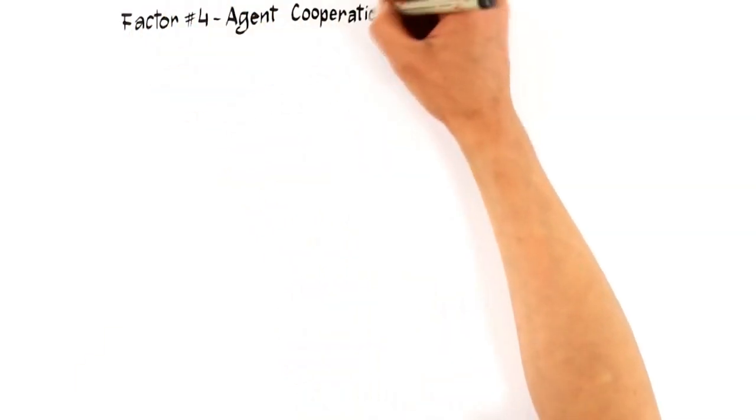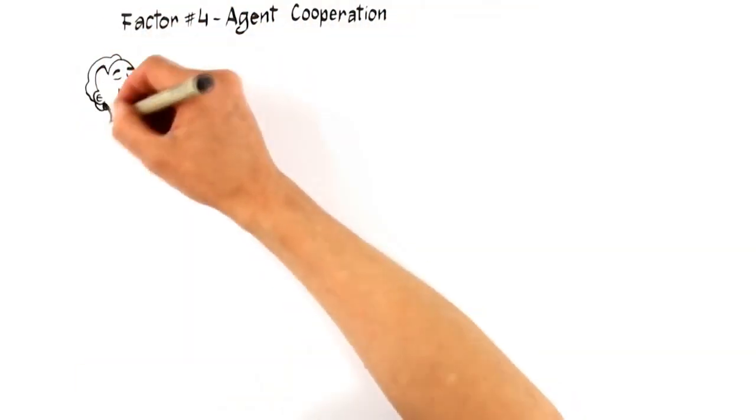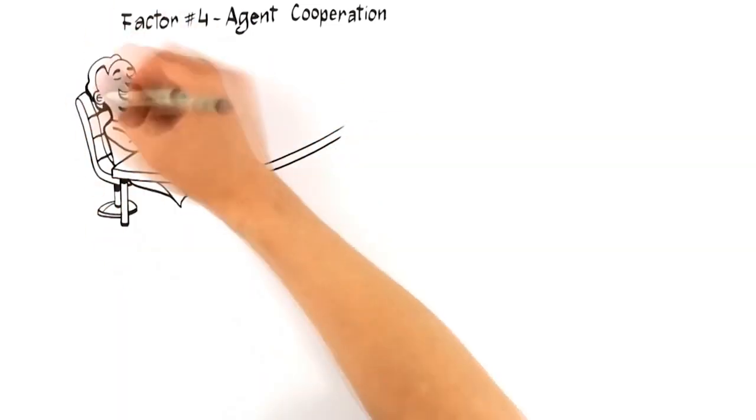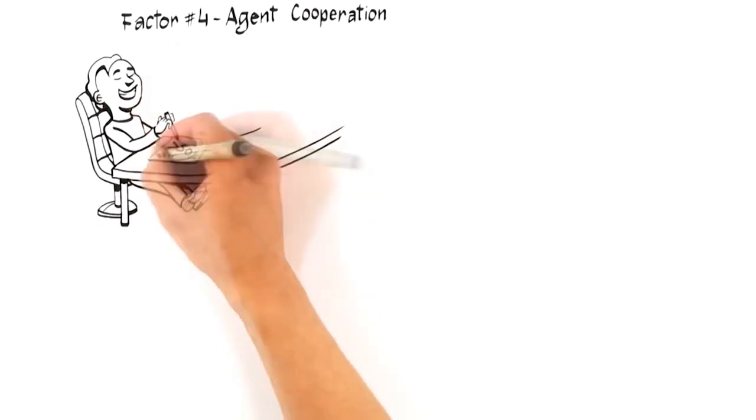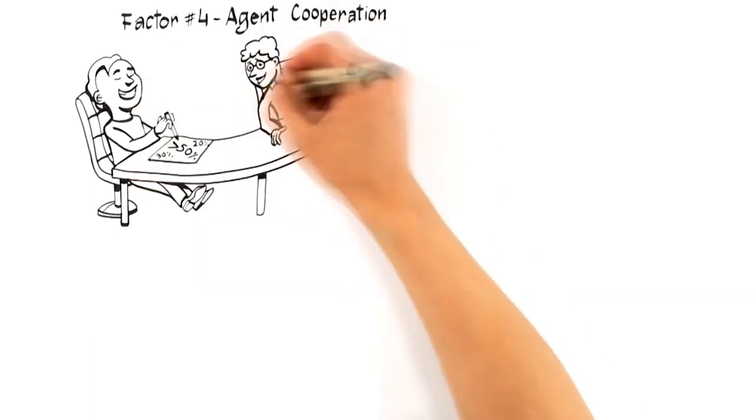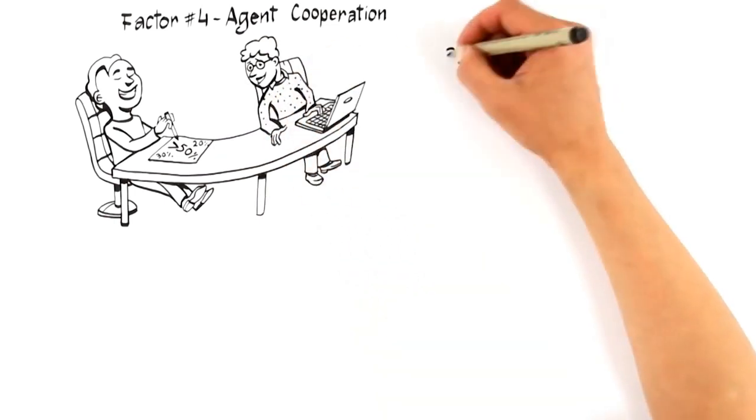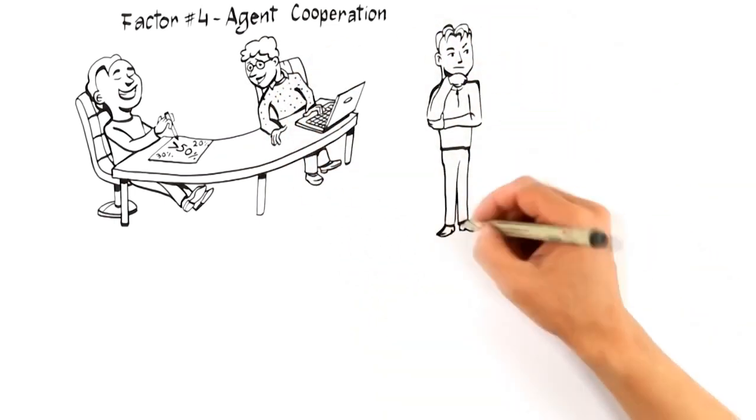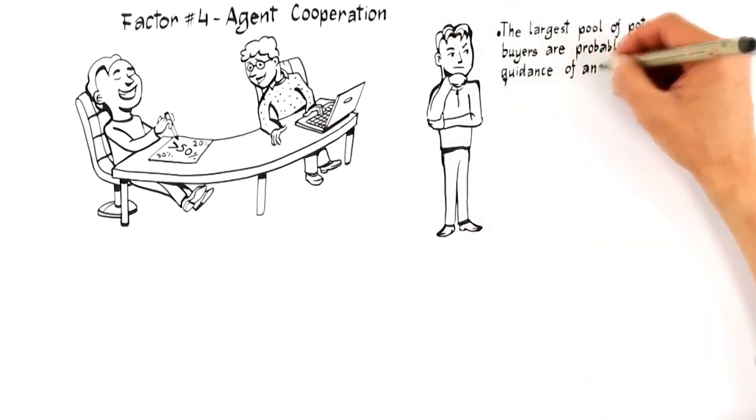Now, a widely known but little discussed selling factor that significantly increases the likelihood of you getting a top dollar offer is Factor 4, Agent Cooperation. Agent cooperation simply predicts that there is a greater than 50% chance that once your home is exposed to the market, another real estate professional will bring you a buyer. Since the largest pool of potential buyers are probably under the guidance of another agent, it's critical that your expert advisor allocate a portion of their marketing budget to get your home in front of the top agents in the market who represent buyers.